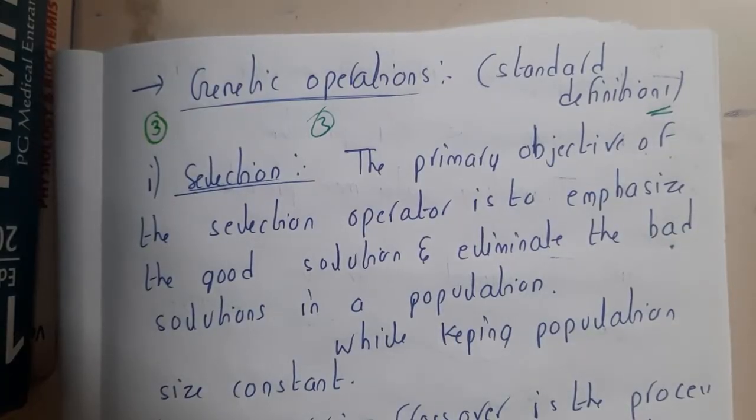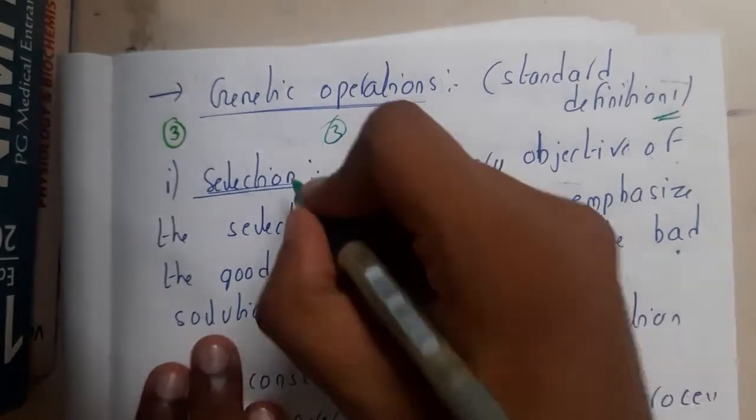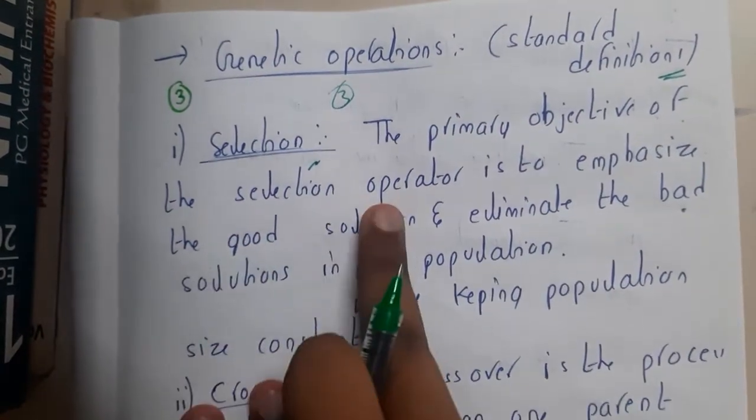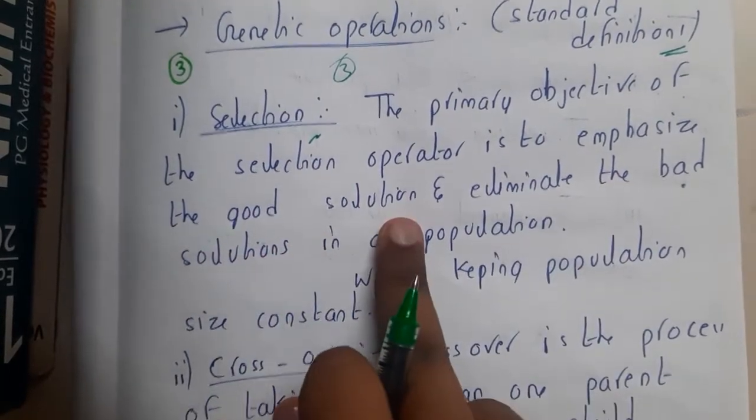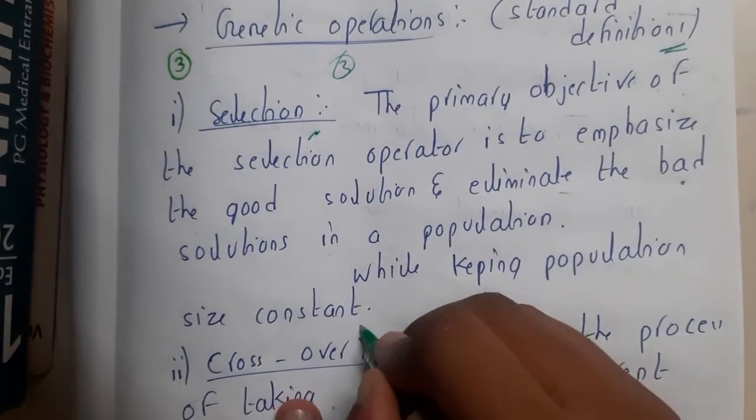Let us start. Selection - the primary objective of the selection operation is to emphasize the good solutions and eliminate the bad solutions in the population while keeping the population size constant.